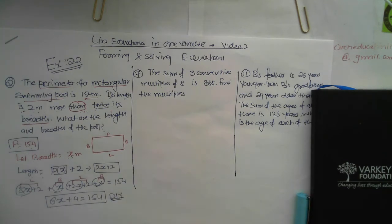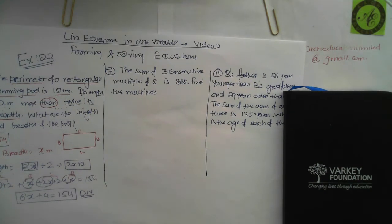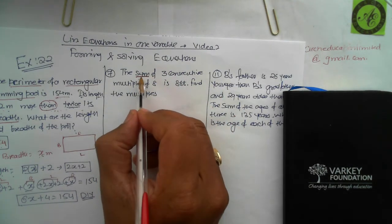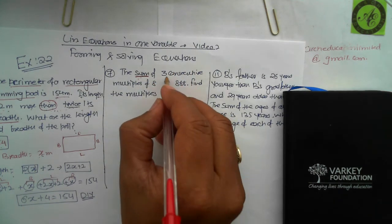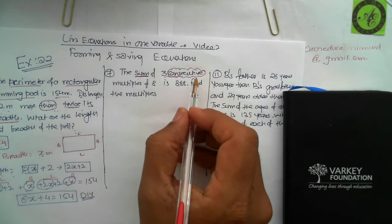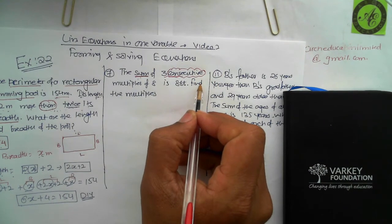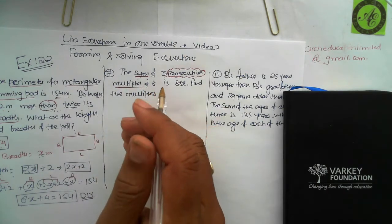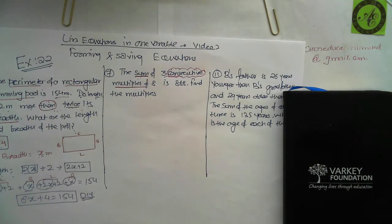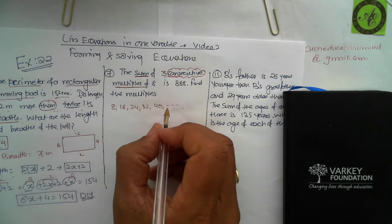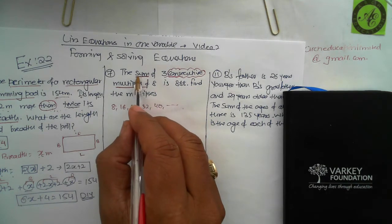Question number seven: the important word is 'sum', which stands for addition. Three consecutive multiples of eight — consecutive means following one after the other, like 8, 16, 24, 32, 40 are all multiples of eight and consecutive as well. We want three of them whose sum, meaning the total of all three, is 888.